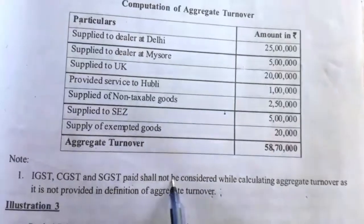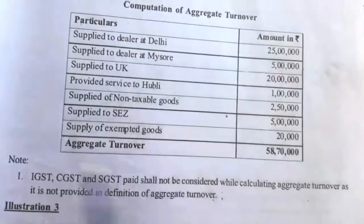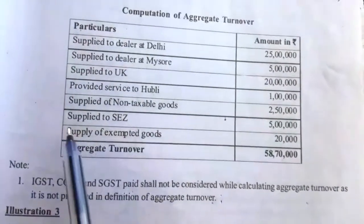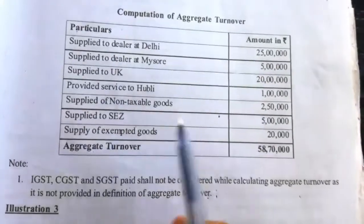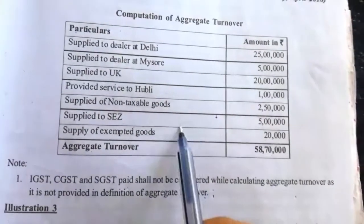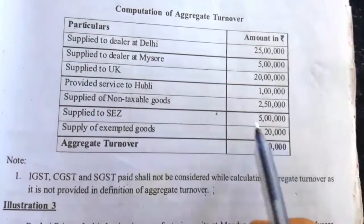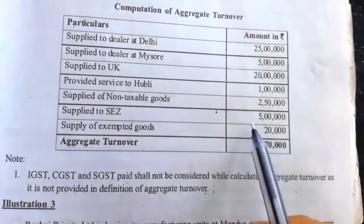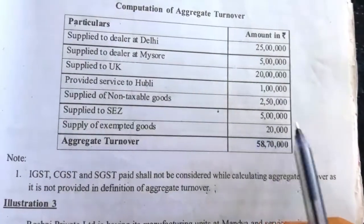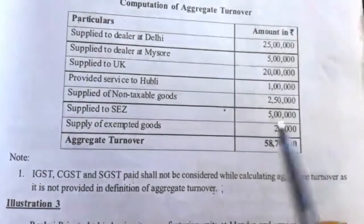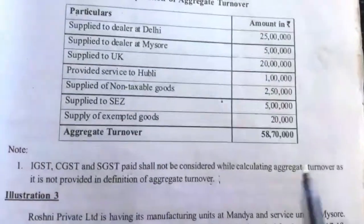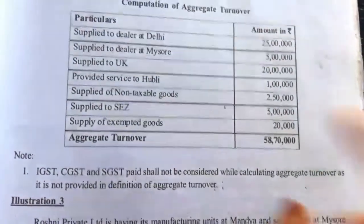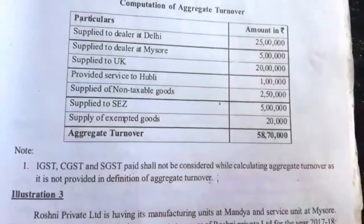You can write the note here, or you can write directly in the amount column: IGST, SGST, CGST paid — not a supply, or nil. Either way is acceptable.